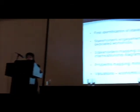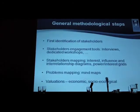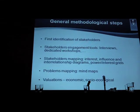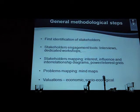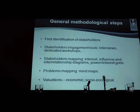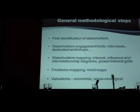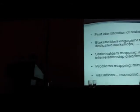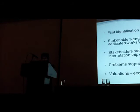The general methodological steps are therefore just very simply put here: first identification of stakeholders, stakeholder engagement through interviews and dedicated workshops, stakeholder mapping to look for their interrelationships, the influence and interest they have towards ecosystem services, problems mapping, mind mapping in order to identify the pressures and related drivers, and then evaluation in terms of economic and socio-ecological terms, which is the next step we're moving forward.